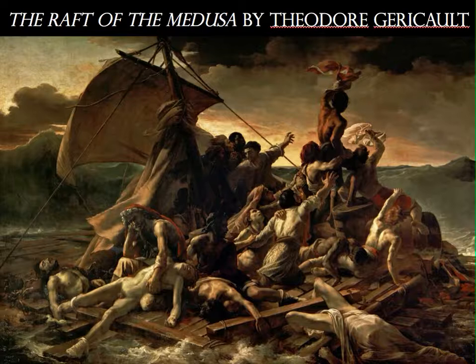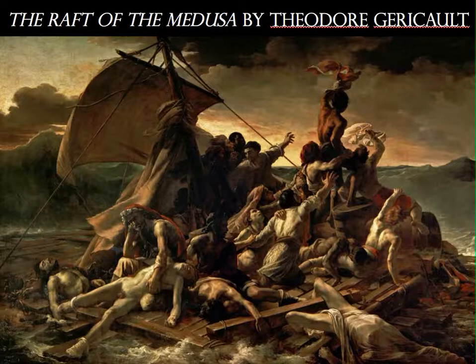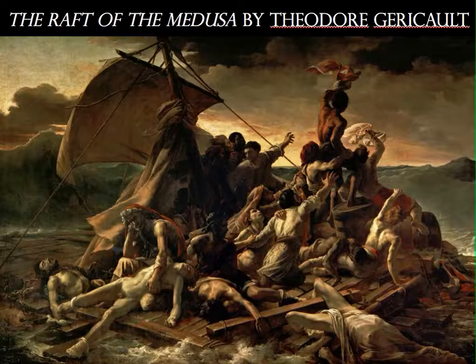Géricault chose to show us the moment when survivors spot the rescue ship on the horizon — you can barely see a small mast at the very horizon line off to the right. Géricault became obsessed with this story. He hired the ship's carpenter to reproduce the raft in his studio, contacted survivors, and went to the morgue to look at bodies of dismembered and drowned men — even borrowing them and bringing them to his studio. One visitor reported his studio looked more like a slaughterhouse than an art studio. He attended the trial of the ship's captain and completed countless sketches before finishing the final version.